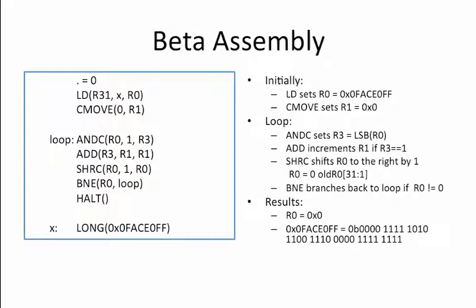0000, 1111, 1010, 1100, 1110, 0000, 1111, 1111. There are 19 ones in 0x0FACE0FF, so R1 equals 19, which equals 16 plus 3, which in hexadecimal equals 0x13.